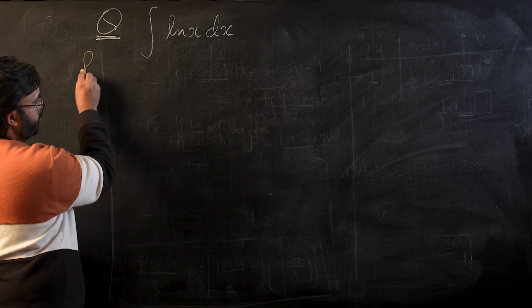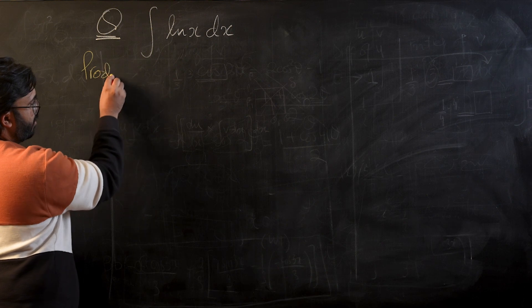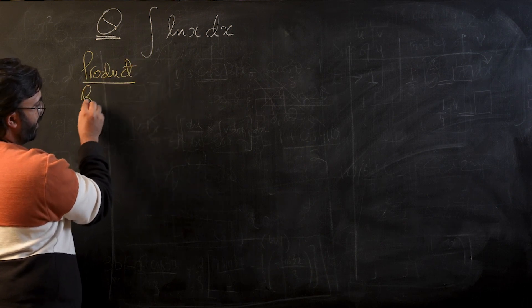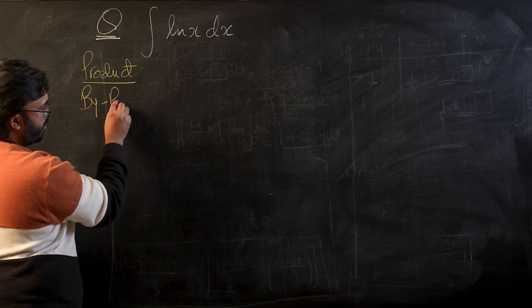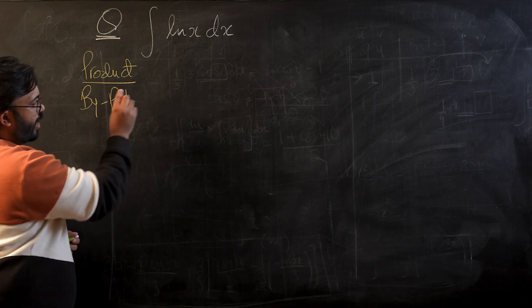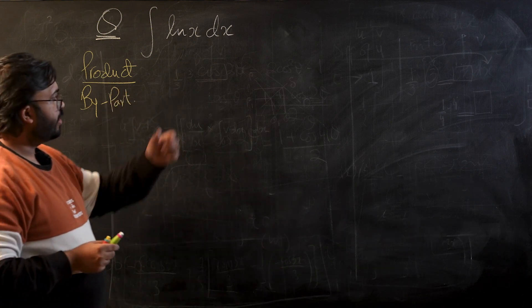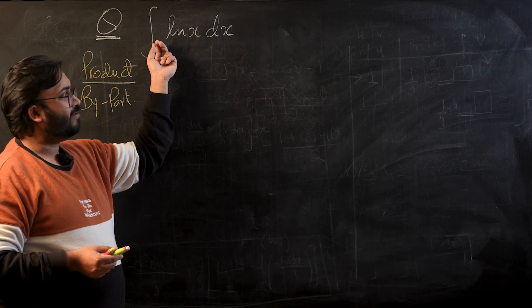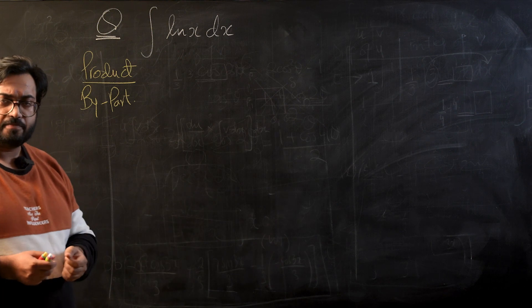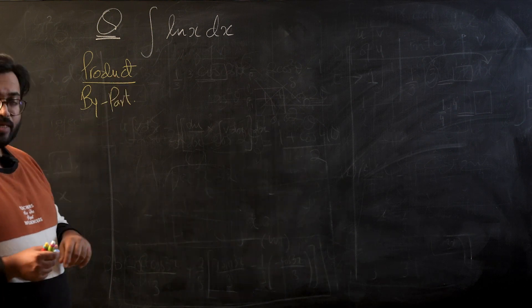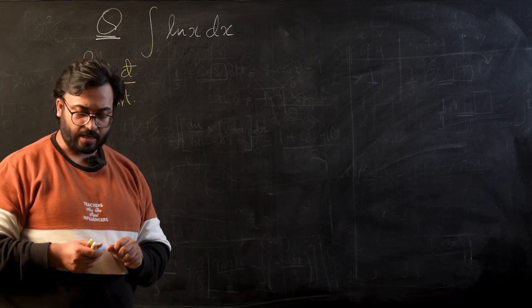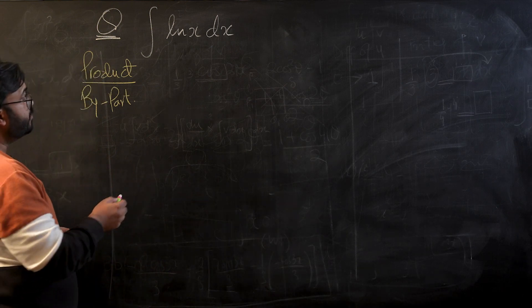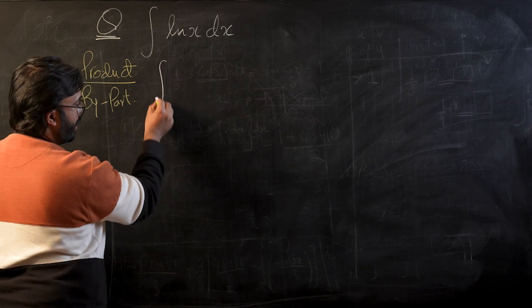So the idea is a little bit unusual and what we're going to use is the product rule. We also call the product rule by parts integration. I use the word strange because product rule is generally used whenever we have two terms being multiplied to each other. The problem we are facing over here is that we only have a singular term, so we're going to convert it into two terms as a product.